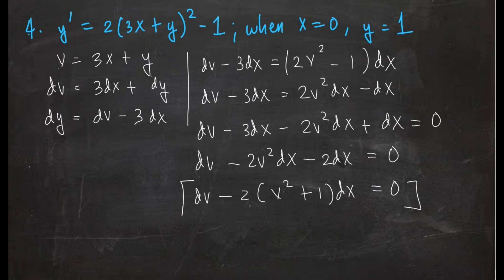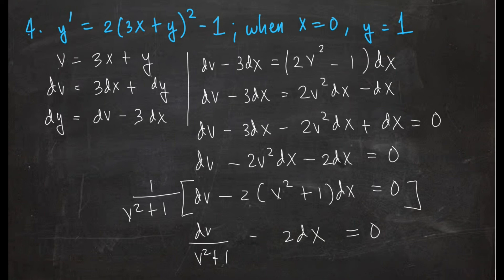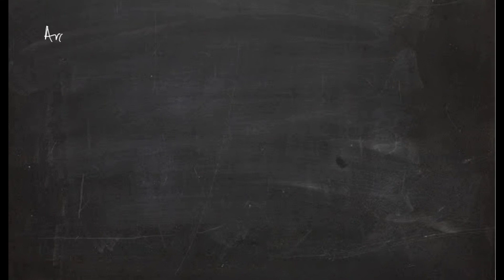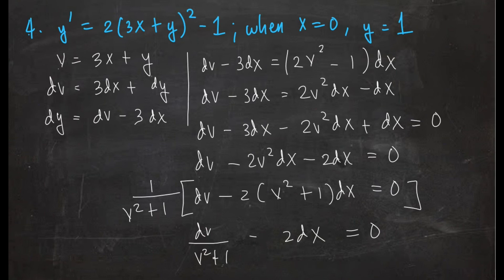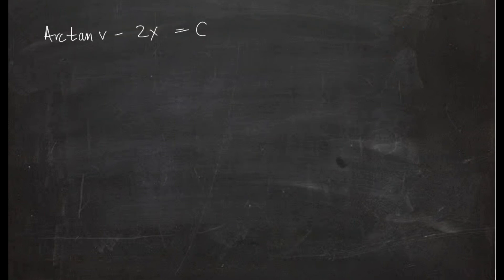This is variable separable. Multiplying by 1/(v² + 1): dv/(v² + 1) - 2dx = 0. Integrating gives arctan(v) - 2x = c. Substituting v = 3x + y back: arctan(3x + y) - 2x = c.